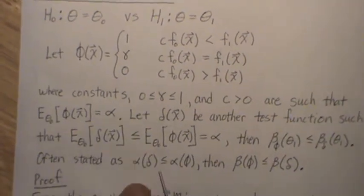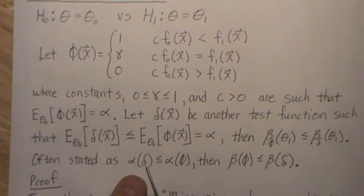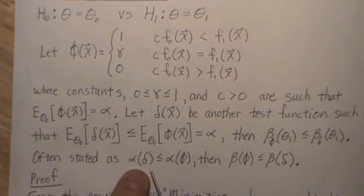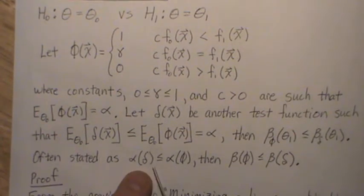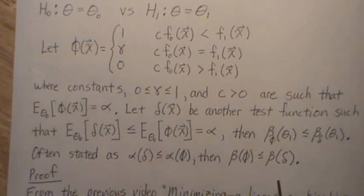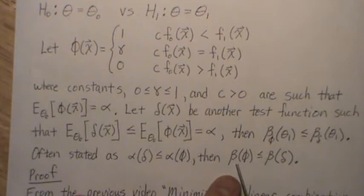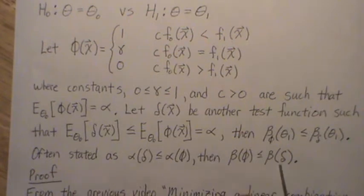Now often it's just simply stated like this: if the size for delta is less than or equal to the size for phi, then the type 2 error probability for phi is less than or equal to the probability of a type 2 error for delta.